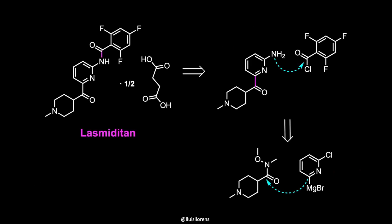A robust synthesis of the drug was described by researchers at Eli Lilly. From a retrosynthesis point of view, a good disconnection would involve breaking this carbon-nitrogen bond, which could be forged via amide coupling between an acid chloride and an amine. The amine fragment could be prepared by the reaction between a Grignard reagent and a Weinreb amide.